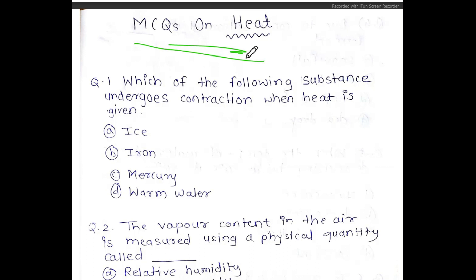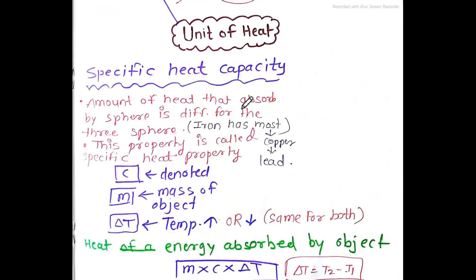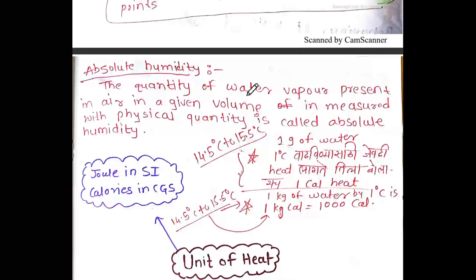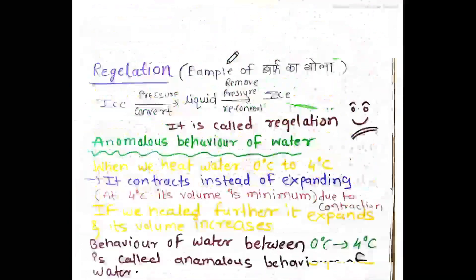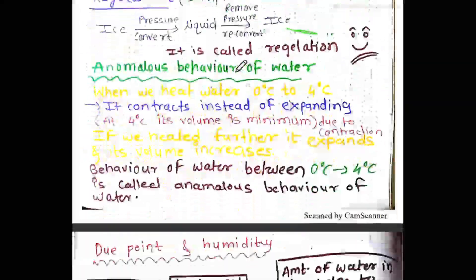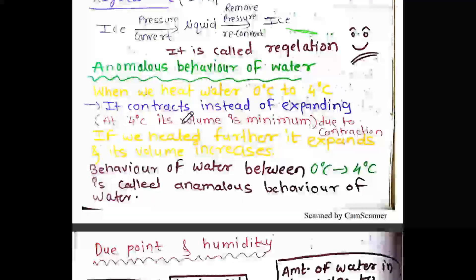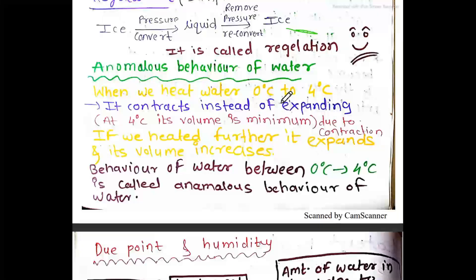The first MCQ: which of the following substances undergoes contraction when heat is given? What is contraction? We need to consider the anomalous behavior of water, where a substance contracts instead of expanding.